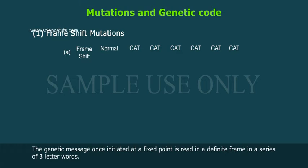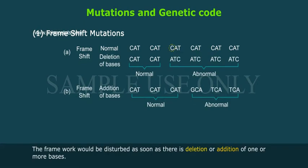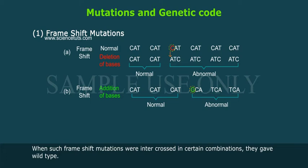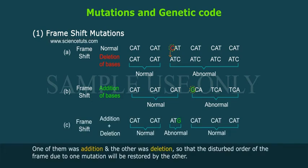Frameshift mutations: The genetic message, once initiated at a fixed point, is read in a definite frame in a series of three-letter words. The framework would be disturbed as soon as there is deletion or addition of one or more bases. The mutation induced by acridine dye depends on addition or deletion of single bases. When such frameshift mutations were intercrossed in certain combinations, they gave wild type — one of them was addition and the other was deletion, so that the disturbed order of the frame due to one mutation will be restored by the other.